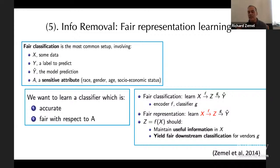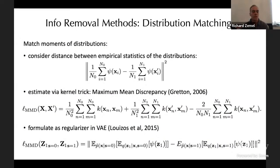We need to assess whether the sensitive attribute A can be predicted from the representation Z. That's my list of applications in which information removal is important. Now, what are some methods people have used for information removal? I'll briefly talk about a couple of kinds of methods.